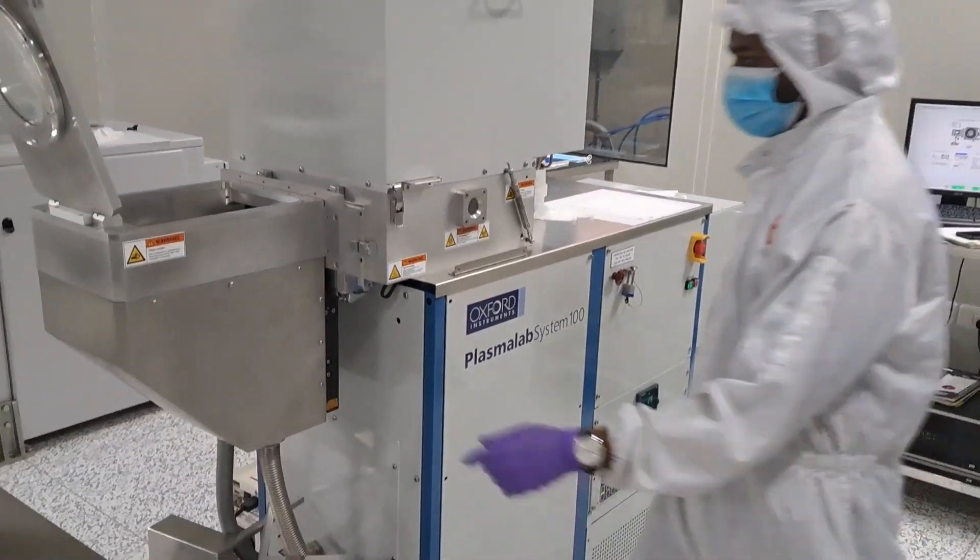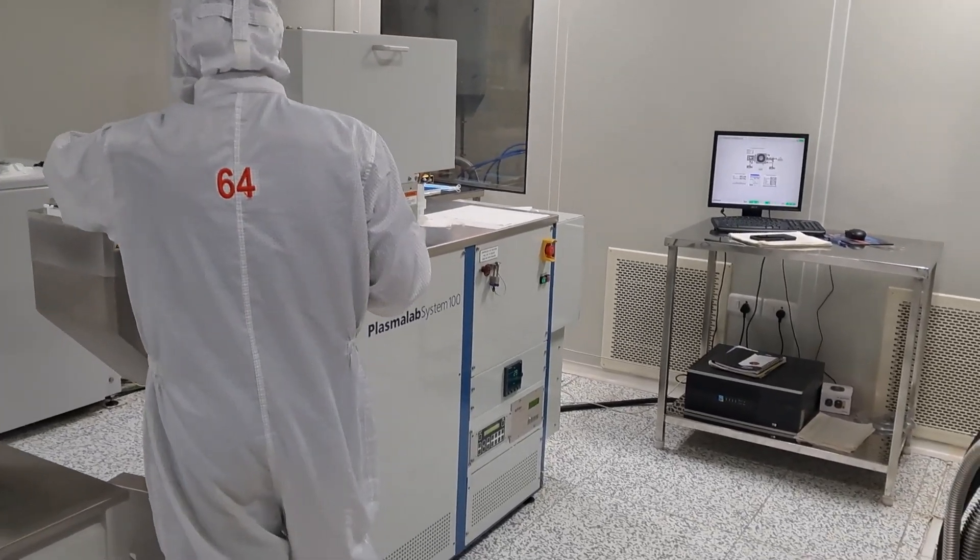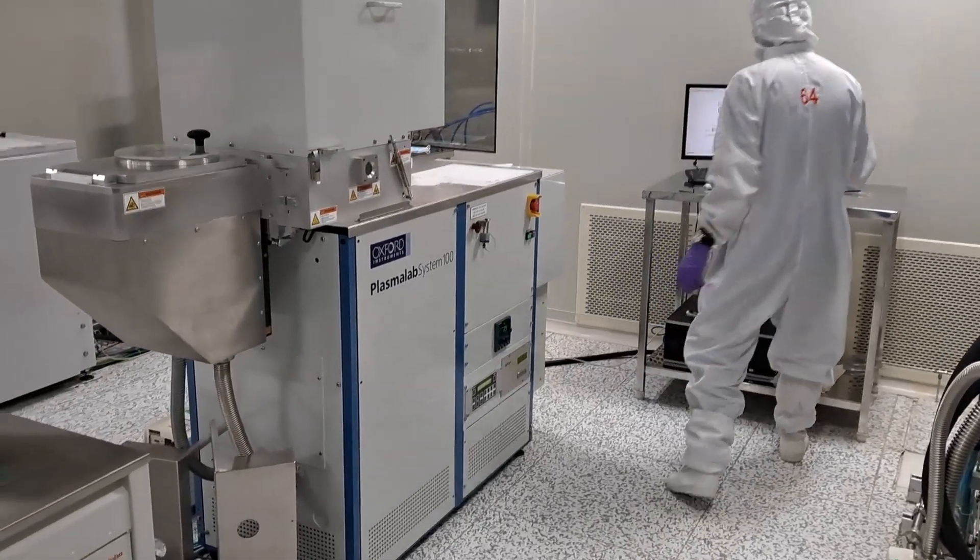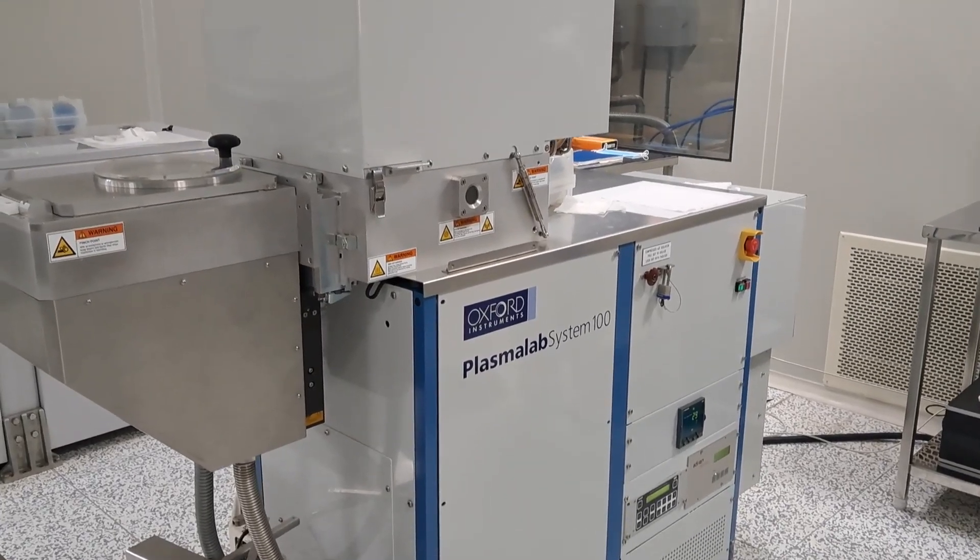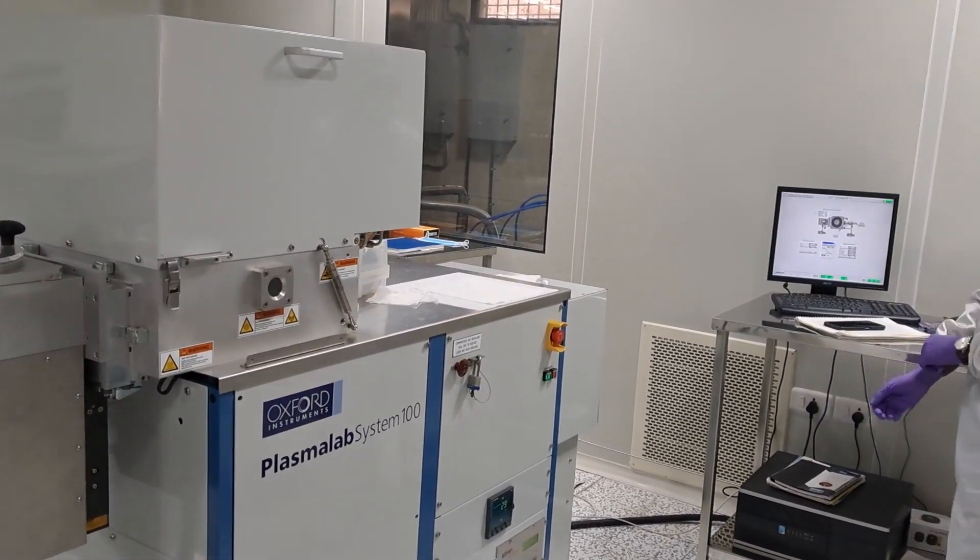ICP-RIE is a popular dry etching technique because of its possibility for high etch rates, great selectivity and reduced ion bombardment damage. Typically, the material removed is a thin film previously deposited on a wafer.